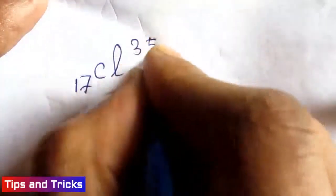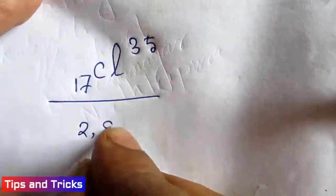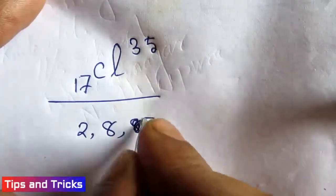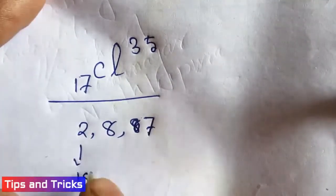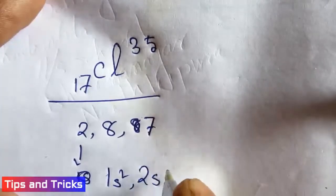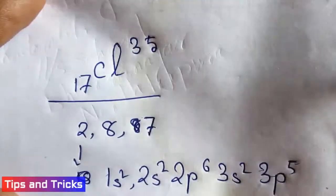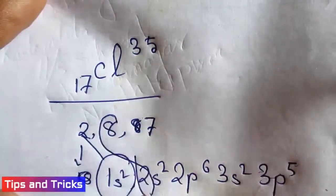1s² 2s² 2p⁶ 3s² 3p⁵. First, K has 2 electrons distributed as 1s².